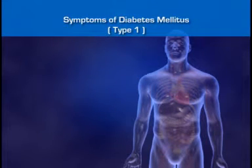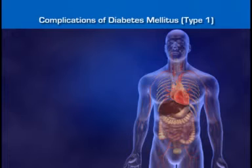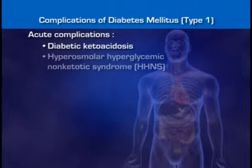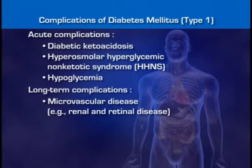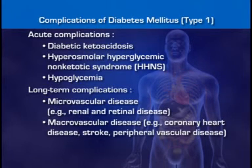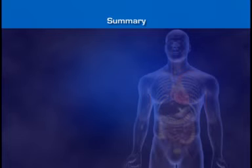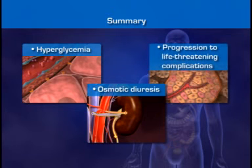Type 1 patients may also experience nausea, severe vomiting, or abdominal pains. Complications of diabetes mellitus include serious acute and long-term conditions, each with its own complex pathophysiology. The most important acute complications are diabetic ketoacidosis, hyperosmolar hyperglycemic non-ketotic syndrome, and hypoglycemia. The long-term complications involve microvascular diseases such as renal and retinal disease, macrovascular disease such as coronary heart disease, stroke, and peripheral vascular disease, and neuropathies. In summary, diabetes mellitus is a disorder of blood glucose control involving an absolute or relative deficiency of insulin or disrupted insulin reception, leading to hyperglycemia, osmotic diuresis, and progression to life-threatening complications.